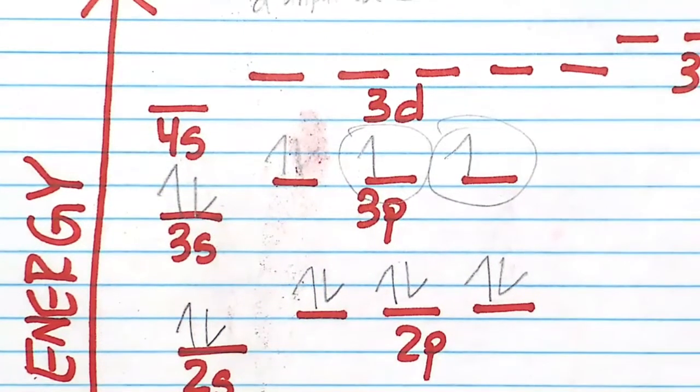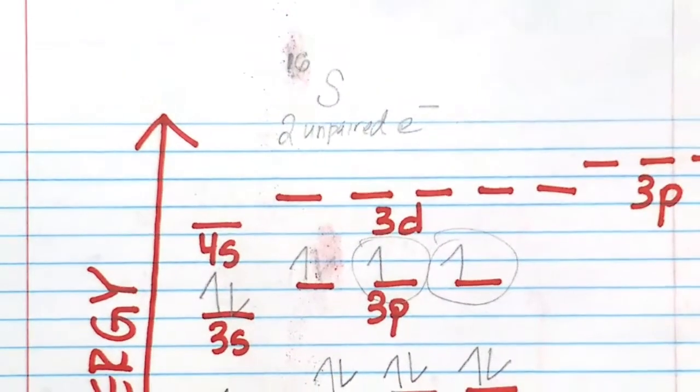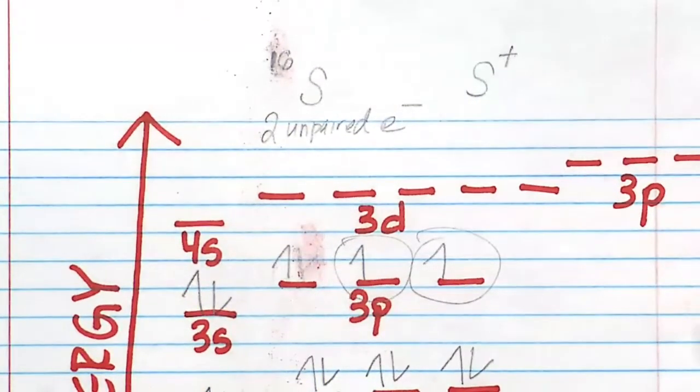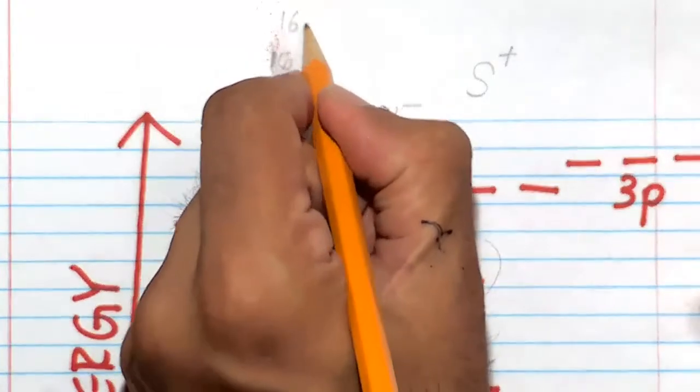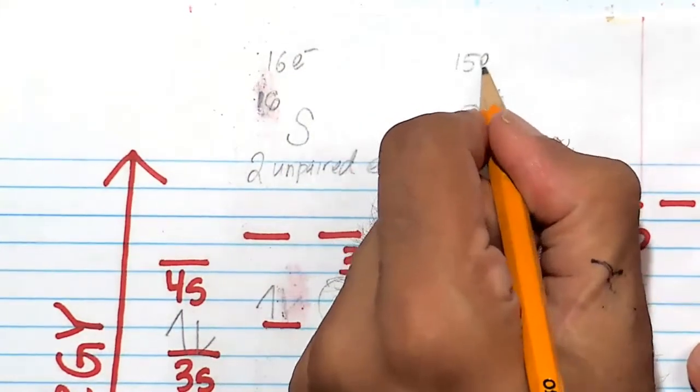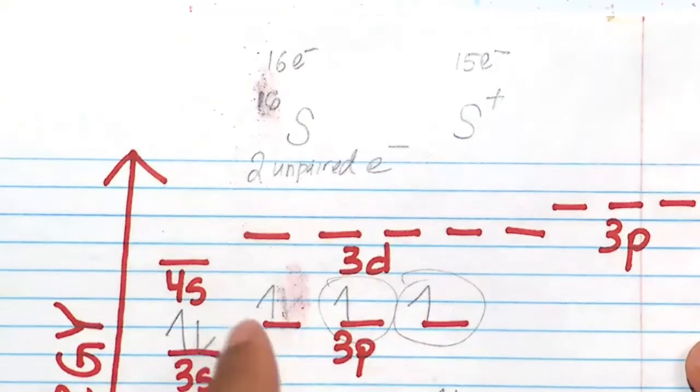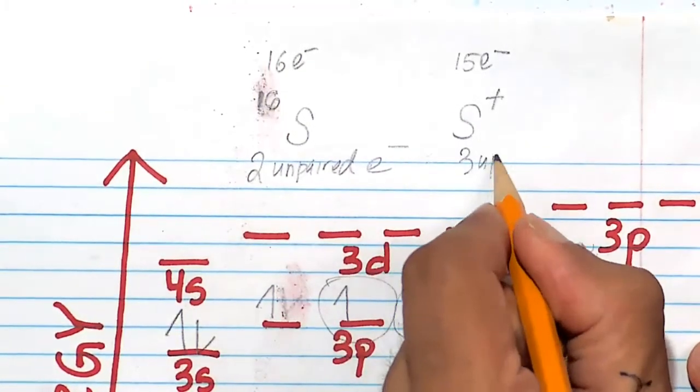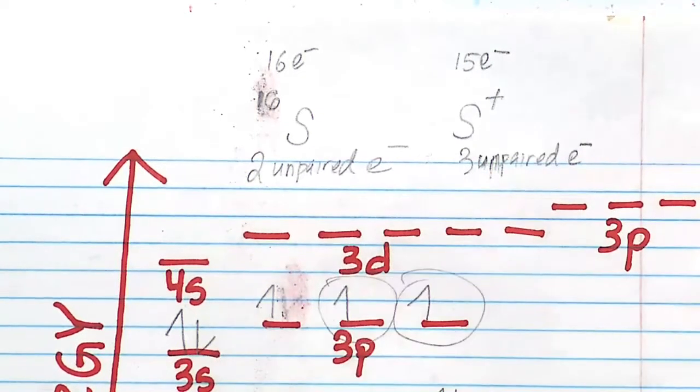So this electron will be gone. And now in S plus, by virtue of being S plus, we have 15 electrons. So this has 16 E minus, this is going to have 15 E minus. And that's going to be unpaired, unpaired, unpaired - three unpaired electrons for S plus.